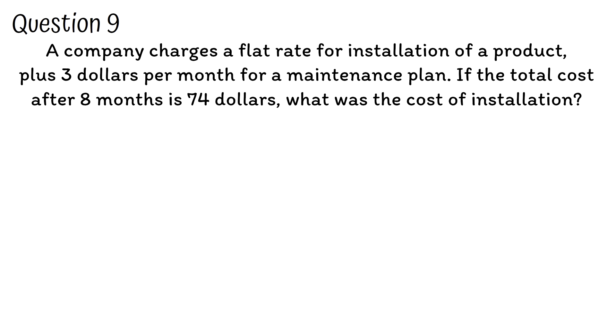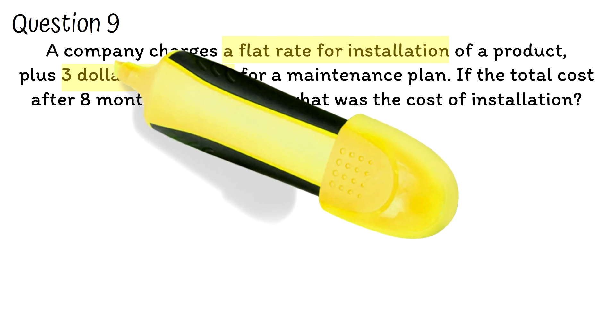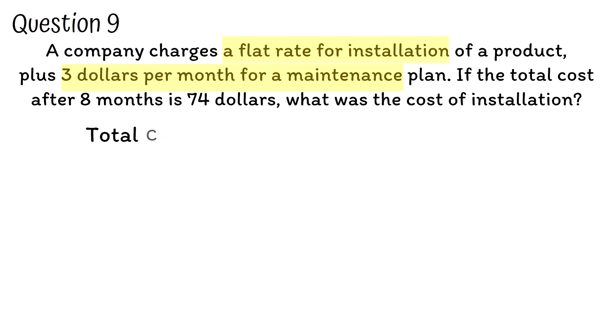Question 9. A company charges a flat rate for installation of a product, plus $3 per month for a maintenance plan. If the total cost after 8 months is $74, what was the cost of installation? We really want you to become used to word problems. The more you practice, the better you become. The company charges a flat rate for installation and $3 monthly fee for maintenance. The total cost after 8 months will be the cost of installation, plus the cost of maintenance plan for 8 months. The total cost has been given as $74. We don't know the initial installation cost. Let's represent it with x. The maintenance plan for 8 months will be the cost per month, which is 3, times the number of months, which is 8.